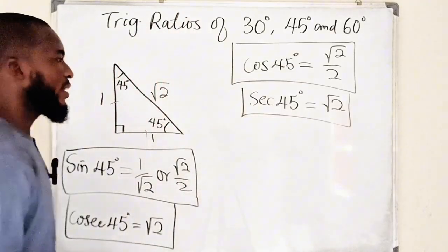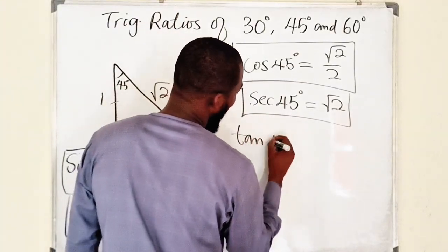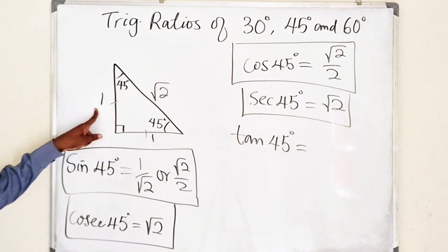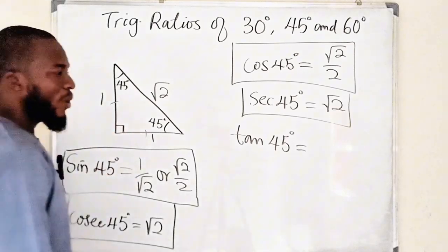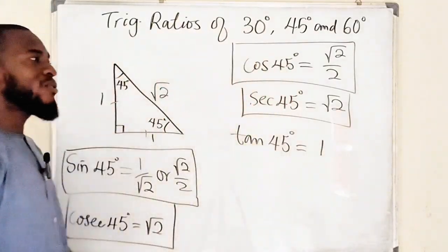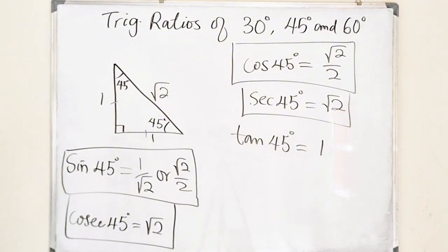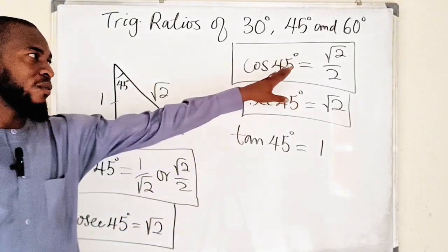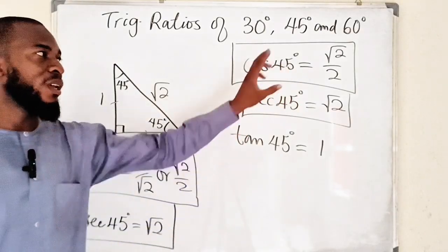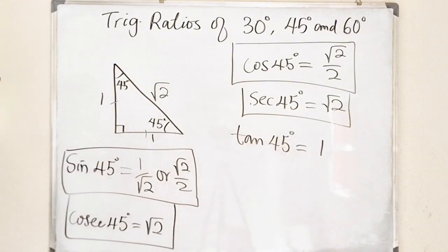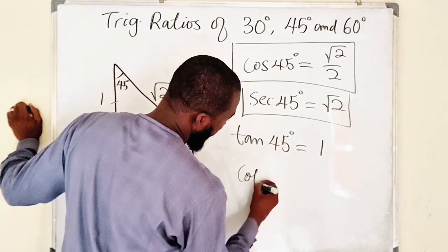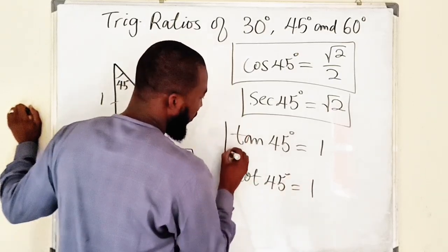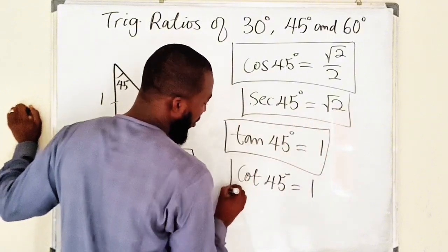Lastly, tangent of 45 degrees equals opposite divided by adjacent, which is one divided by one, equals one. You can verify: sine of 45 degrees over cosine of 45 degrees is root two over two divided by root two over two — since they have the same values, dividing them gives one. Cotangent of 45 degrees — the reciprocal of one — is also one. So both tangent and cotangent of 45 degrees equal one.